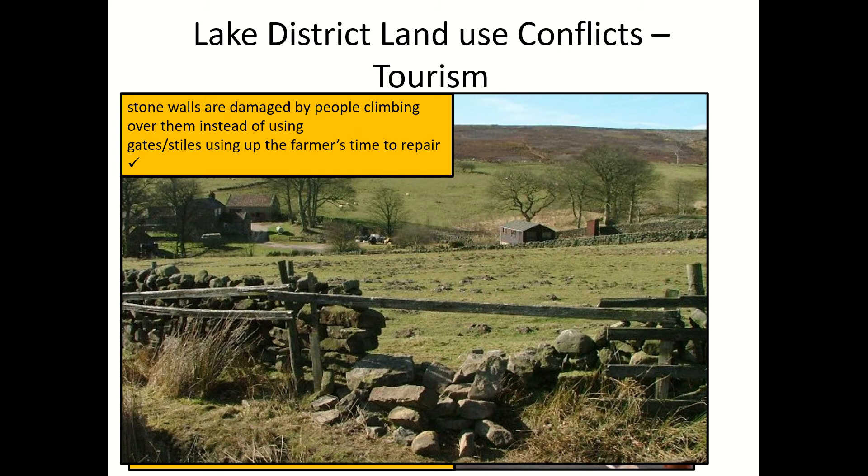Stone walls can be damaged by people climbing over them instead of using the gates or the little steps built over walls, which are known as stiles. Again, you need to point out why this is a problem. It's a problem because it uses up the farmer's time to repair, and it's a lot of hard work to repair stone walls. Also, if you have broken walls, livestock can escape, and that means they can get hit by cars — that's going to kill the sheep or whatever has escaped, and that's going to cost the farmer money.